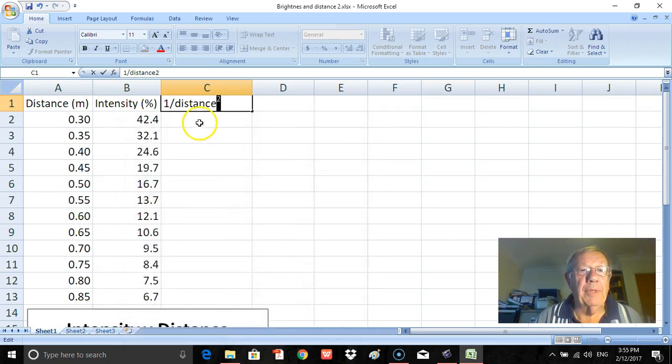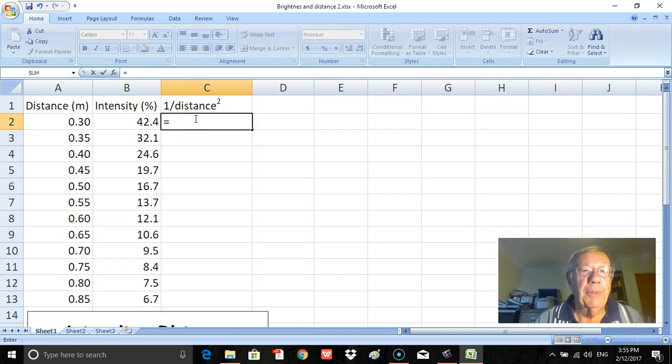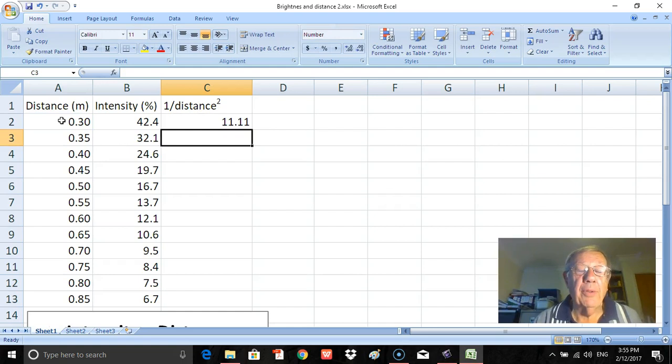So I'll select that. In order to put the distance squared, I'll go up here to home and I'll go across here to superscript, click superscript there, and click OK. So I've got 1 over distance squared there. And in order to get the data for the 1 over distance squared, all I'm going to do is put in a formula for starters. And all formulas must start with an equal sign. So type in equals 1 over this cell, the value in that cell squared, so that raised to the power of—this is the hat, what we sometimes call it—2.